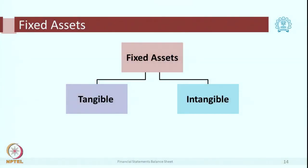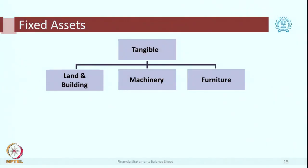Whatever operations are happening, fixed assets themselves do not get converted, but they act as catalysts — they support the whole process. Now what are the types of fixed assets? There are two types: one is tangible, the other is intangible. Tangible means something which you can touch — which has physical existence. The examples are very easy: we have got land, machinery, furniture, vehicles.